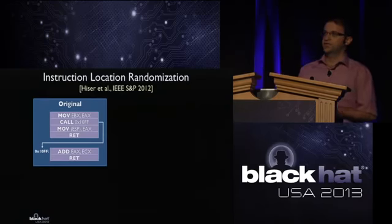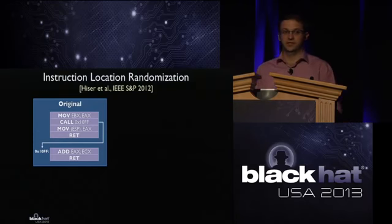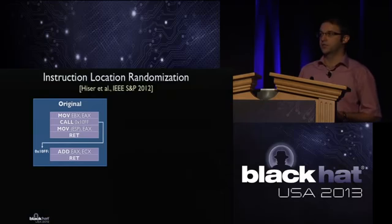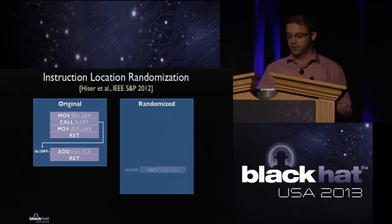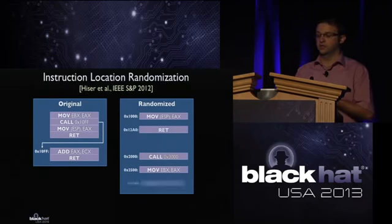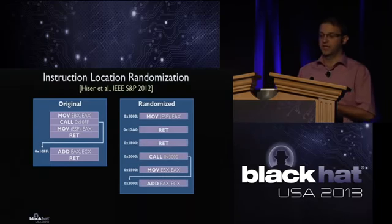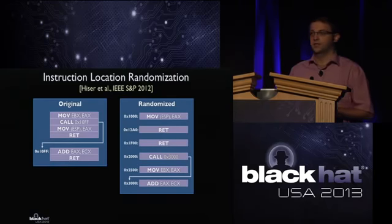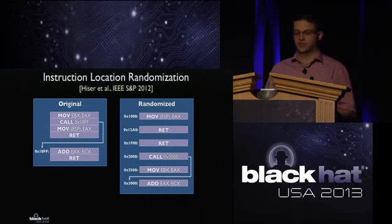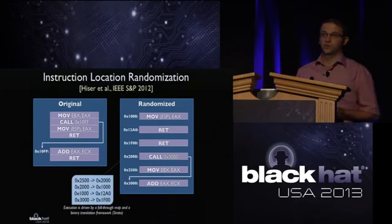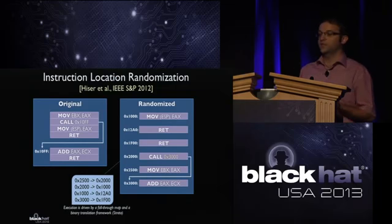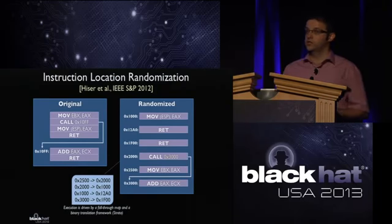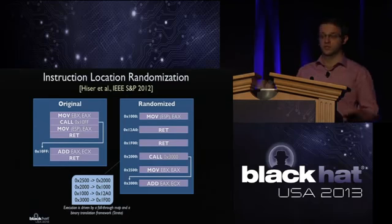The final randomization technique is instruction location randomization, which offers the highest entropy. It randomizes the location of every instruction in memory, distributing six instructions across the entire address space with adjusted memory offsets. At runtime, the program runs in a binary instrumentation framework guided by a fall-through map indicating the next instruction. This entire framework incurs significant performance penalties and loses cache benefits because every instruction is distributed in memory.